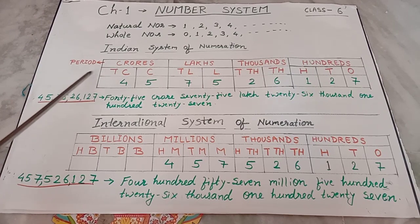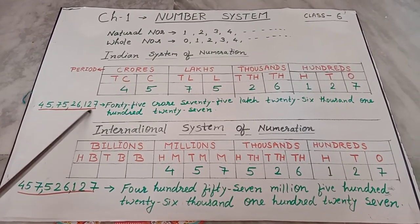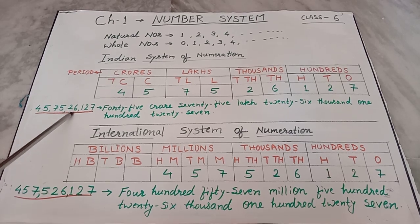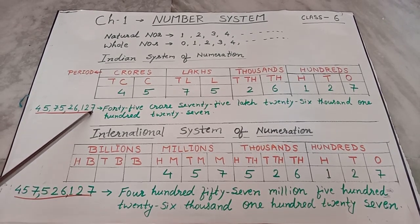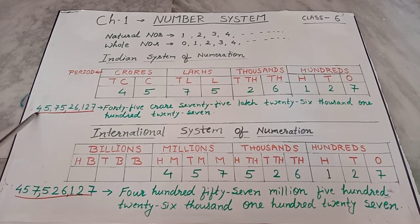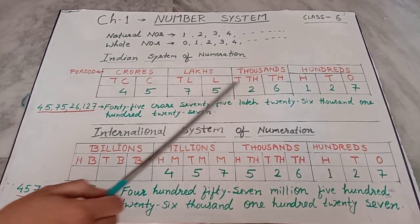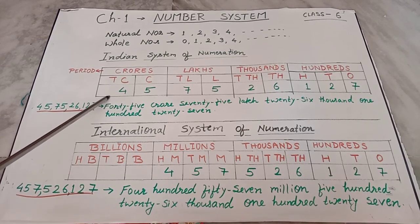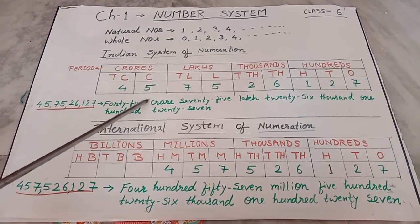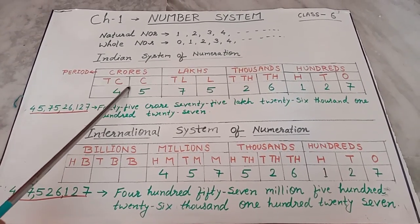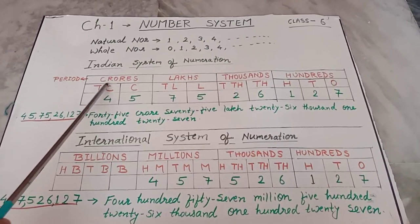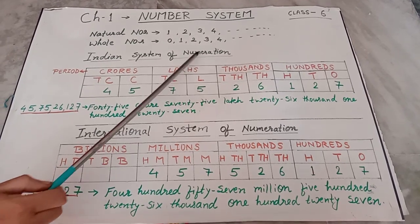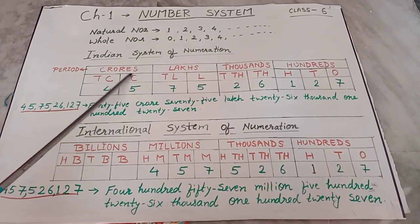Taking one example — the large number is 4,57,52,127. In the Indian system of numeration, by this place value chart you can see how you will write this in words. Here in the place value chart you can see the periods: the 100s period, 1000s period, lakhs period, and crores period.